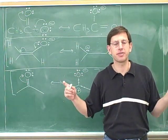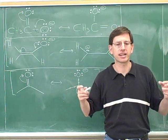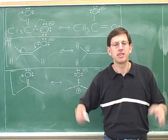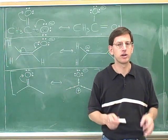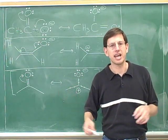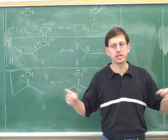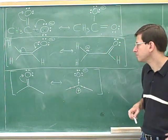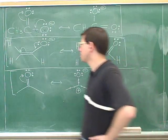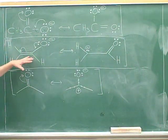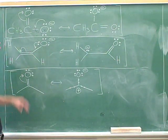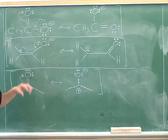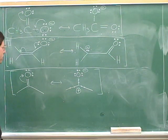Remember that charges are what make you unstable and reactive. Anything that's unstable and reactive is an atom that's likely to want to go through a reaction. On the other hand, any atom that doesn't have any charge is likely not to be very reactive. So for example, if we take a look at this enolate ion over here, which of the atoms do we expect to be reactive and involved in a reaction?